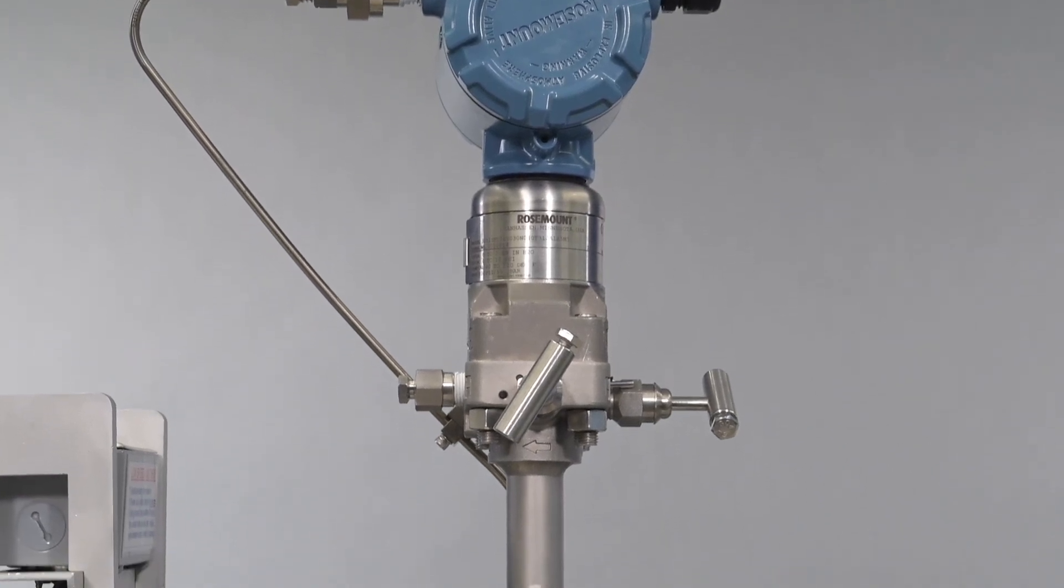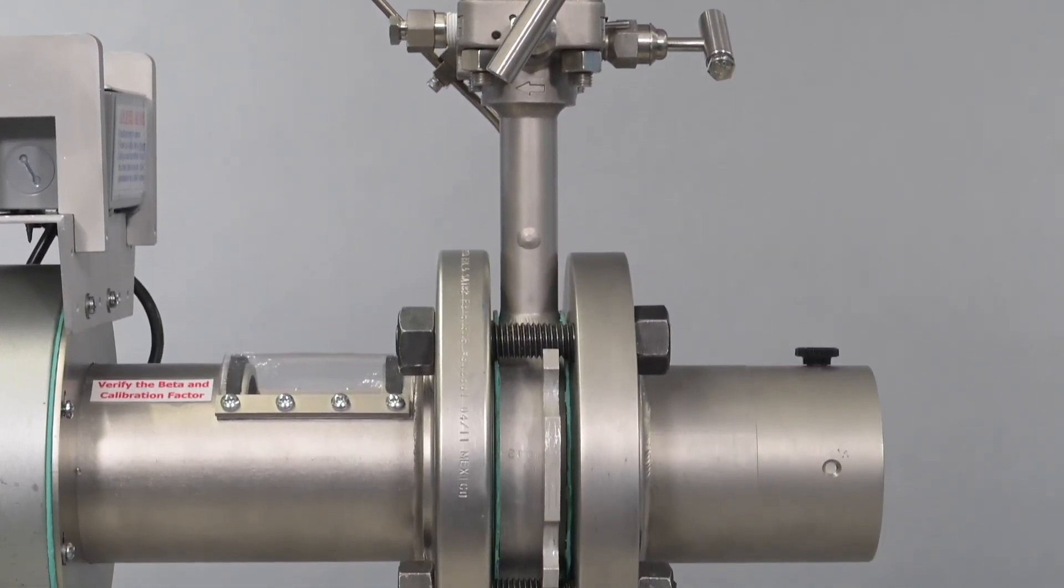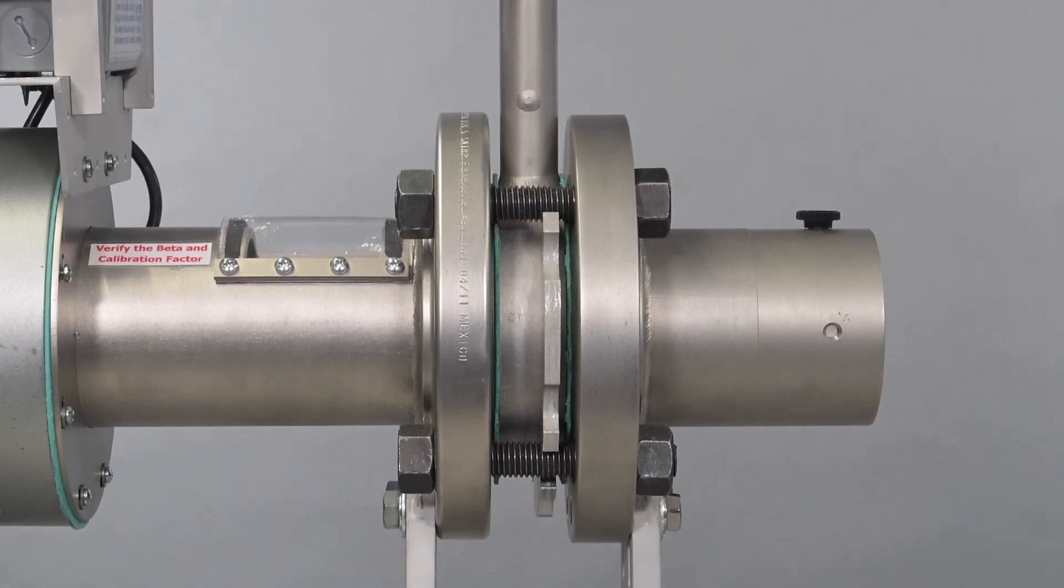It is important to verify the alignment of the flow meter by ensuring that the outside edge of the wafer body lines up with the edge of the raised face flange.